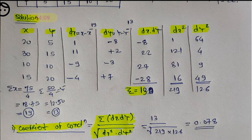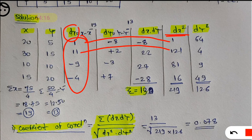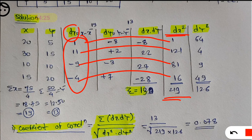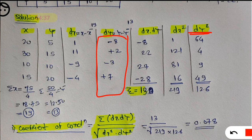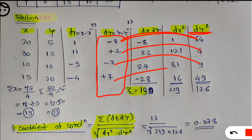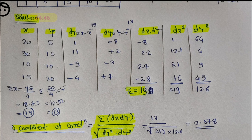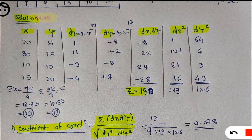Next, calculate dx square — just square the dx values. 1 squared is 1, 11 squared is 121, minus 9 squared is 81, minus 4 squared is 16. Summation of dx square is 219. Then calculate dy square: minus 8 squared is 64, 2 squared is 4, minus 3 squared is 9, 7 squared is 49. Summation of dy square is 126.